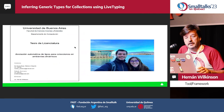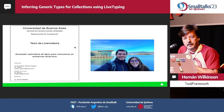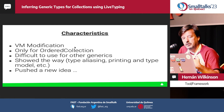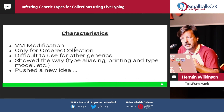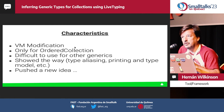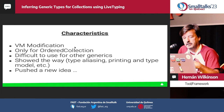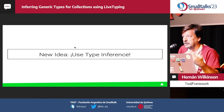Two years ago, we started a research thesis by Mariano and Anita that they defended last year. It was the first attempt to add generic types to live typing. We also modified the VM, but it only worked for OrderedCollection — it wasn't a solution that could scale to other kinds of classes or generics. But it showed us the way: it revealed issues like type aliasing, printing types, and the most important thing — it gave us a new idea: why don't we use type inference to infer generic types based on the information that live typing has?